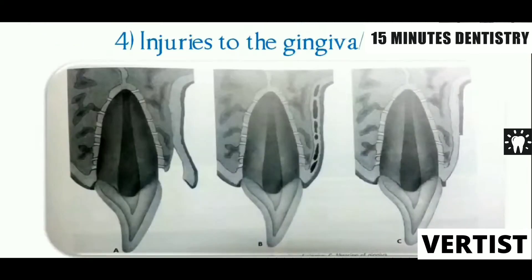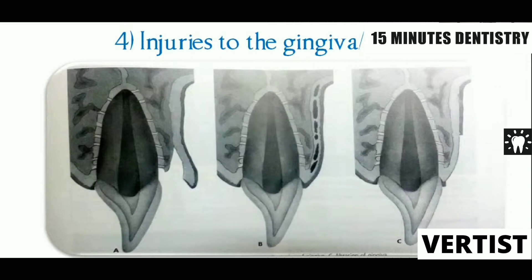The last subcategory is injuries to the gingiva or mucosa. Laceration is a sharp cut on the soft tissue, similar to an incision made with a scalpel and blade. Contusion is caused by a blunt object and results in hematoma formation and bruising of the oral mucosa — similar to when your hand gets caught in a door and you see hematoma formation under the nail. Lastly, abrasion involves loss of epithelium — peeling of the epithelium — occurring when the impacting object rubs against the soft tissue.